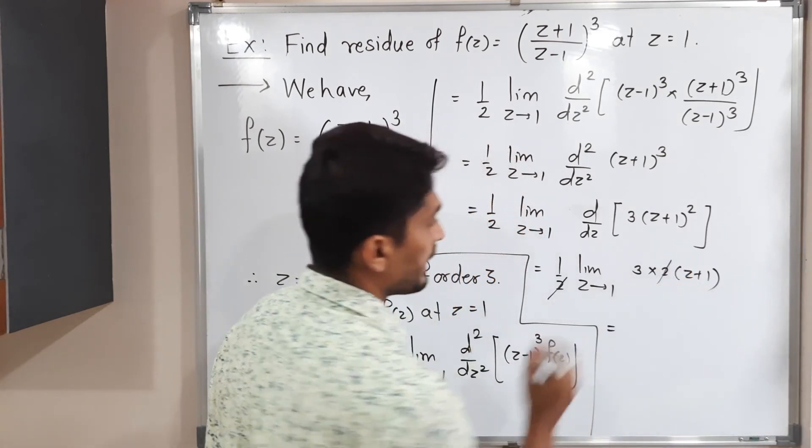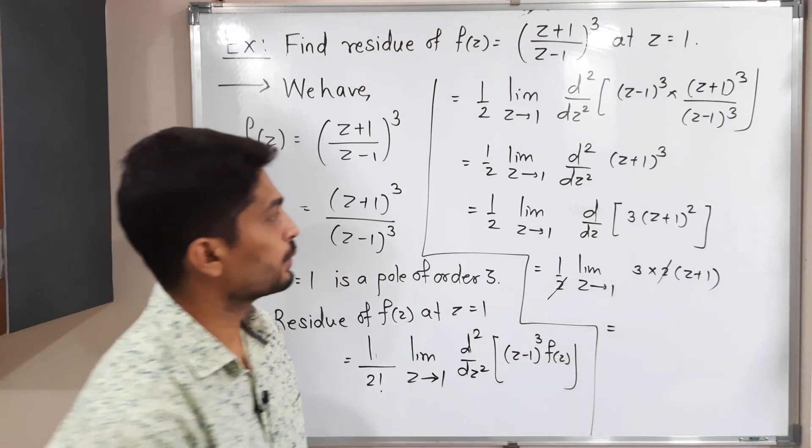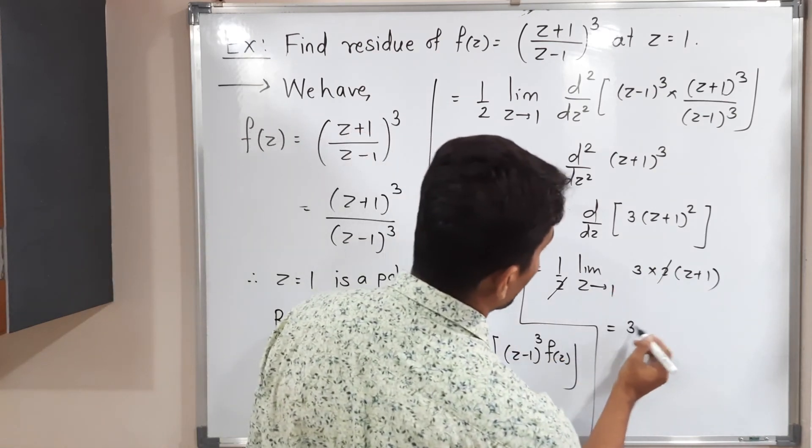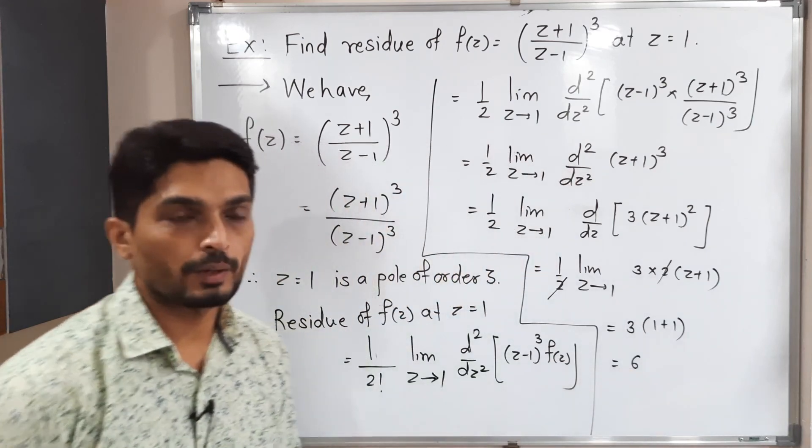So what will happen? This 2 and 2 will get cancelled. Now I am going to put z is equal to 1 there. So what will we get here? 3 times 1 plus 1. So this is equal to 6. This is required residue.